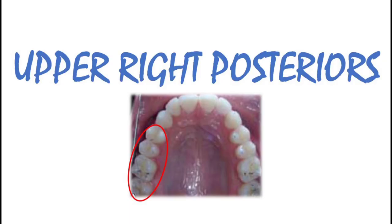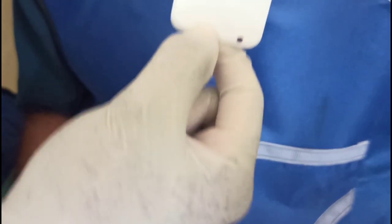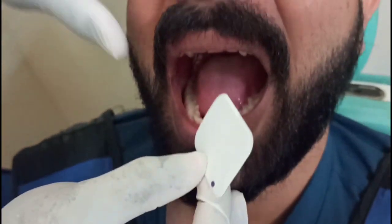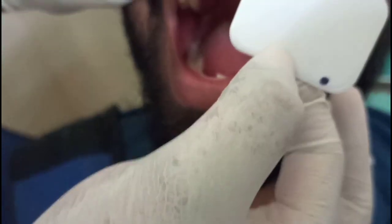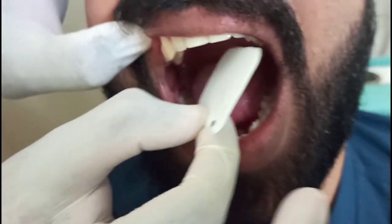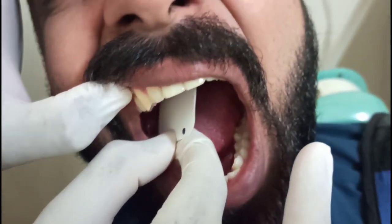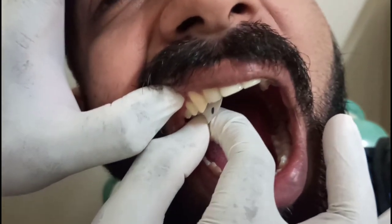Placing the film for upper right posteriors: similarly place the thumb finger and hit the thumbnail to the occlusal plane, making sure that the edge of the film is parallel to the occlusal plane, and ask the patient to hold it with his index finger.